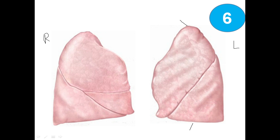The upper or superior lobe, and on the downside is the inferior lobe. The left lung has one fissure, which is the oblique fissure. We also have the cardiac notch and the lingula, which is a tongue-like structure.